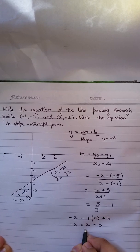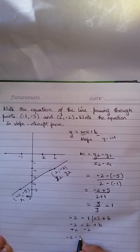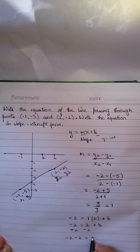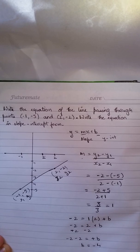Now I'll subtract 2 from both sides. I'll get -2 minus 2 equals b. So my b is -4.